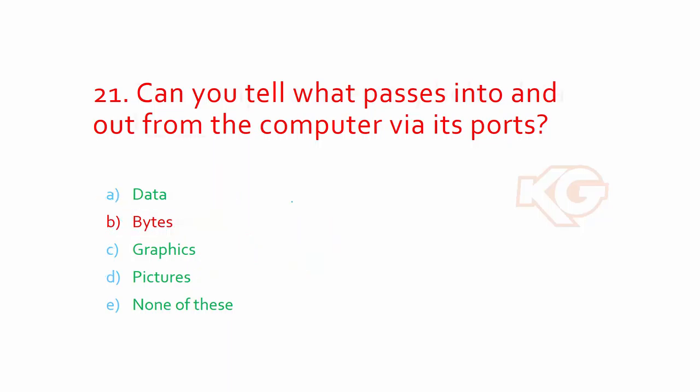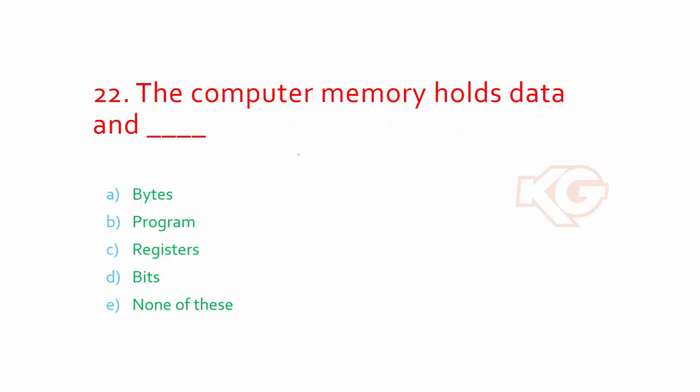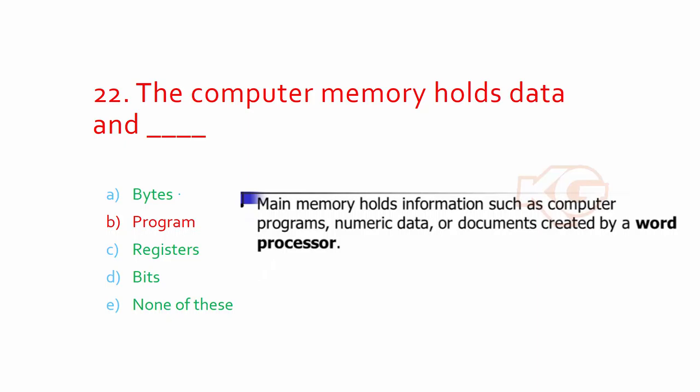The computer memory holds data and what? Is it the program? You might be confused with bytes, register, and bits. Registers are related to semiconductor devices, and bits and bytes of course are answers too. But which is pinpointing to this question is the program, because in main memory you can see it's all divided into pages. A couple of pages together holds a program, for example, your word processing or Photoshop.